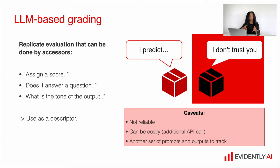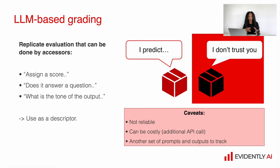You can achieve some descriptors by manual labeling of course, but you can also send all this data through the API to a large language model and ask it to answer those questions — for example, mark whether the output of your model answers the specific question, whether the output is correct JSON, or whether the output is correct working JavaScript code, etc.